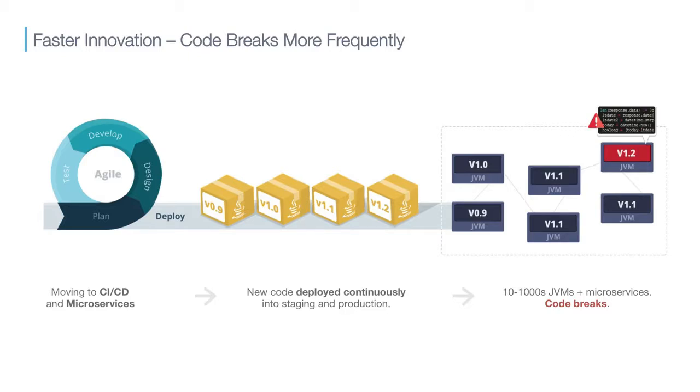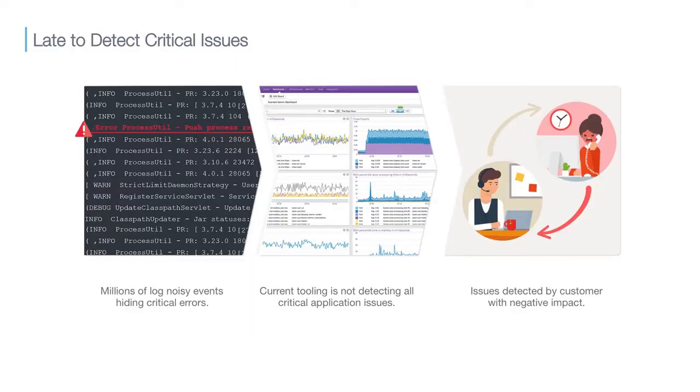We want to help you solve that new release cycle as you introduce errors faster, but also not forget that you have old code built by developers that have left, and you might be happy to support that old code as it's still in production. We're also trying to help you solve how fast you detect those issues. Some of the issues are very critical — your customer will be calling. That's already too late, but sometimes even worse, your customer doesn't call.